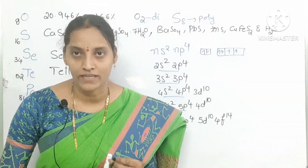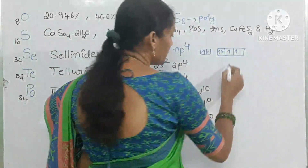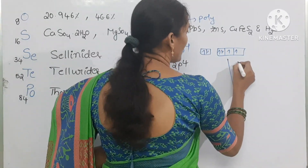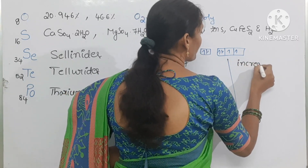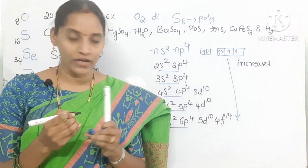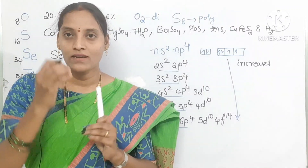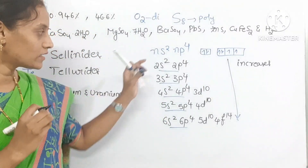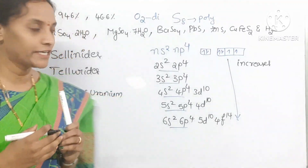Atomic and ionic radius increases down the group because atomic number increases, so the shell number increases, and automatically the size increases.